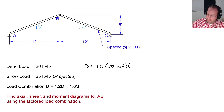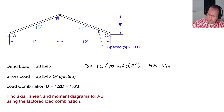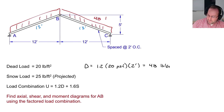Looking at the dead load: 1.2 times 20 pounds per square foot multiplied by the two-foot tributary width gives 48 pounds per foot. That load is applied vertically following the slope of the truss, with a magnitude of 48 pounds per foot.